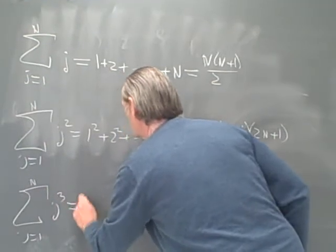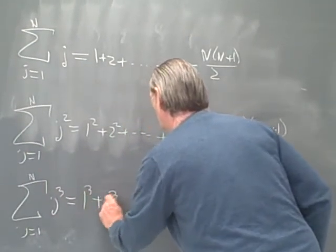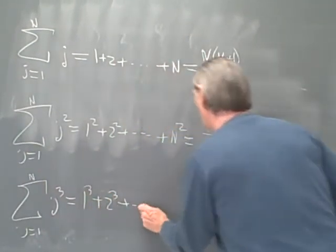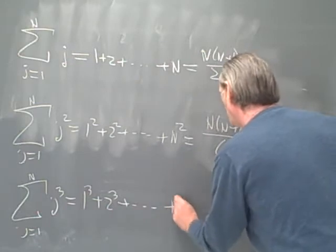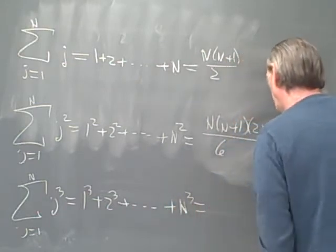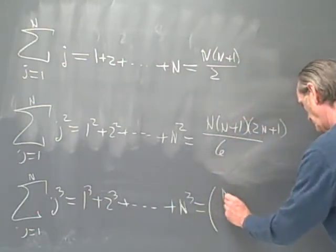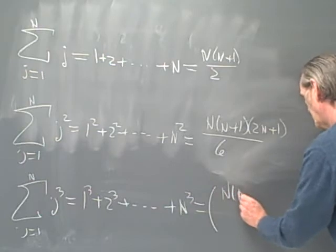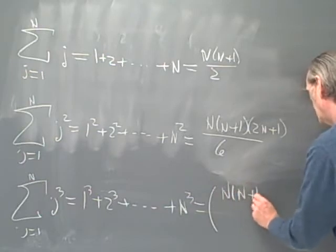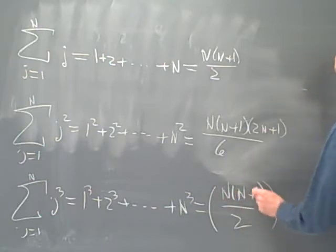And our last identity is the sum from j equals 1 to n of j cubed, which equals 1 cubed plus 2 cubed plus ... plus n cubed, and that's going to be equal to the quantity n times (n plus 1) over 2, squared.